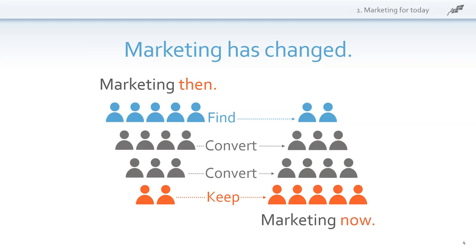Now it's the opposite: find, convert some more, convert some more of those, and then keep them. You find a few, then go to Facebook, create a Facebook presence, go on LinkedIn, create a LinkedIn presence, get email lists going, create that presence, convert and convert, and it's a snowball effect.